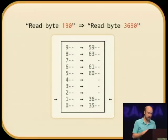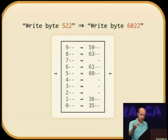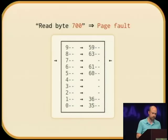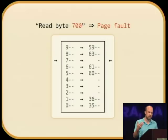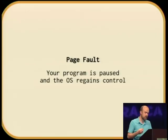A write to byte 522 would be mapped into a write to real byte 6022. And for pages that don't have an allocation at all, an event is generated called a page fault, which pauses your program, returns control to the operating system, and the OS then has several options about how to respond.